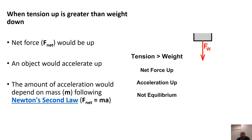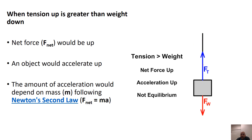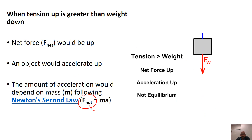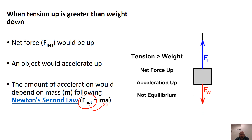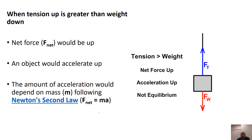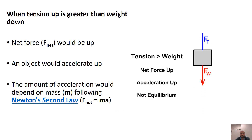When tension up is greater than weight down, we have a net force. The Ft is bigger than Fw, so we have a net force going upward. By Newton's second law, net force creates acceleration — it's not just motion. We can have motion without net force, as seen in dynamic equilibrium. So the object would accelerate up — not equilibrium.